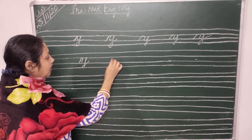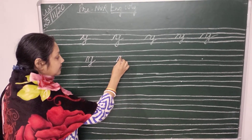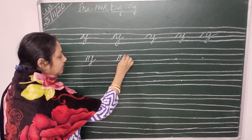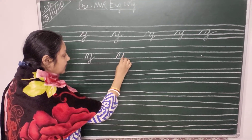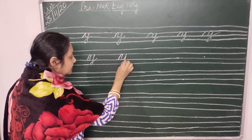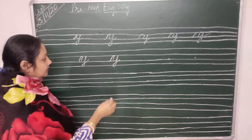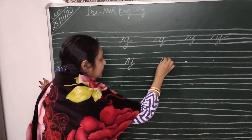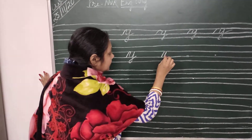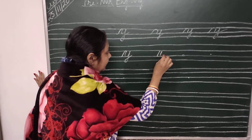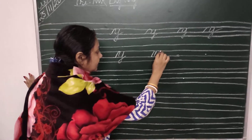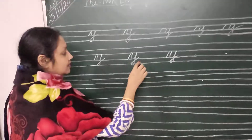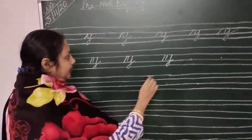Once again: go up to the second line, come down to the third line, again go up to the second line, come down to the third line and just give a curve. Then again go up to the second line, come down to the third line and give a curve. So this is your small letter Y.